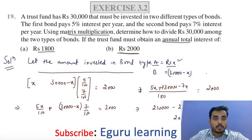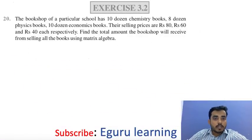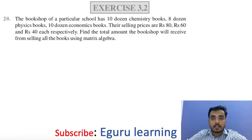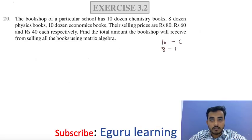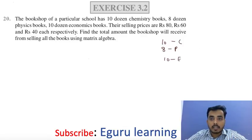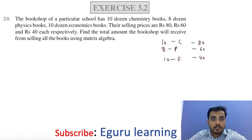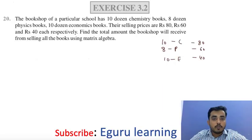Now let's move to question number 20. The bookshop of a particular school has 10 dozen chemistry books, 8 dozen physics books, and 10 dozen economics books. Their selling prices are: chemistry Rs. 80, physics Rs. 60, and economics Rs. 40 respectively. Find the total amount the bookshop will receive from selling all the books using matrices.